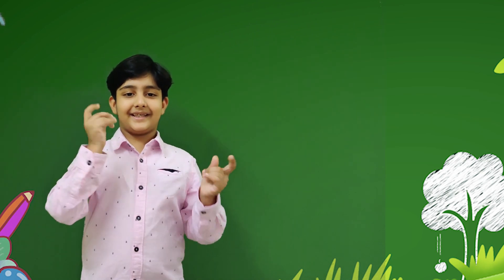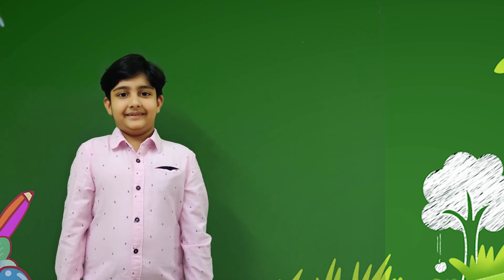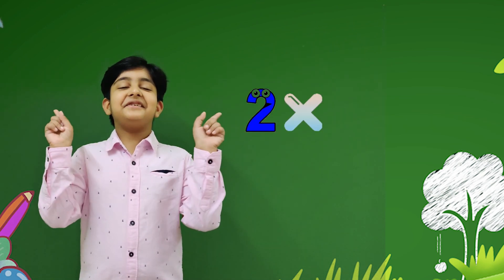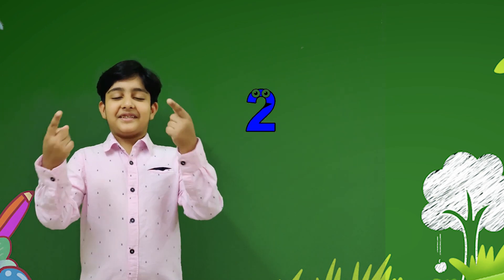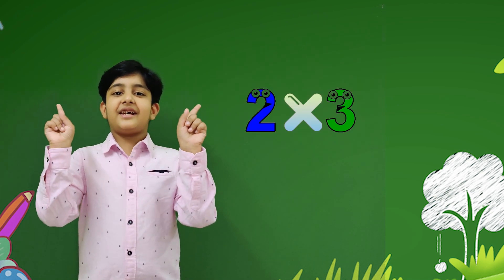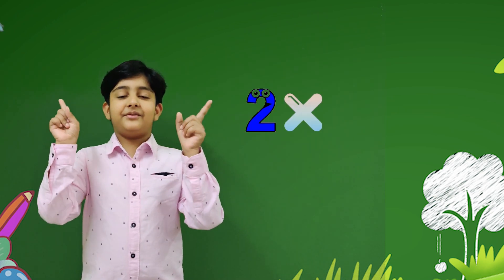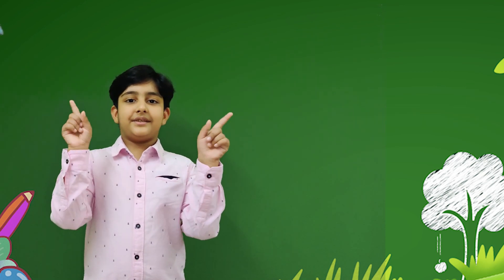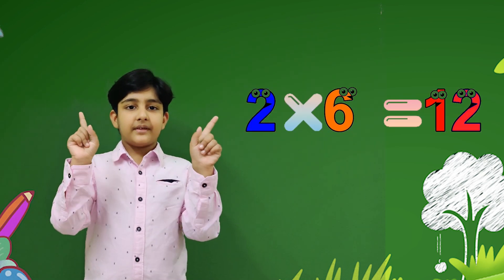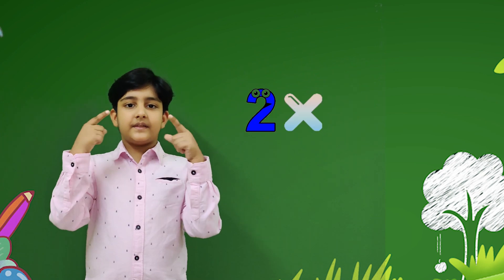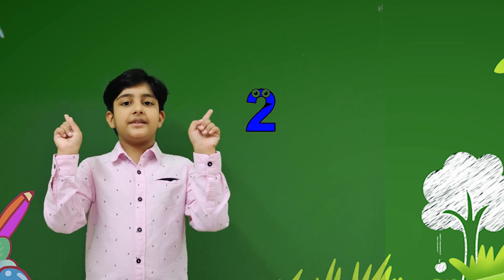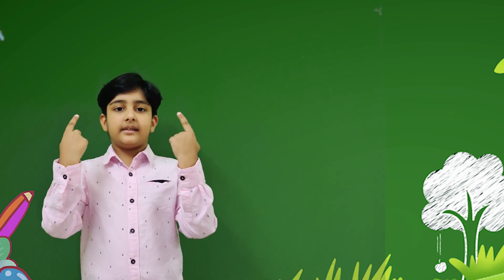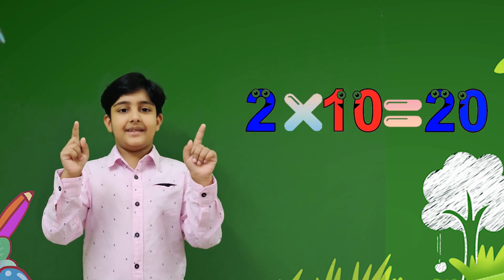Let's sing again! 2 ones are 2, 2 twos are 4, 2 threes are 6, 2 fours are 8, 2 fives are 10, 2 sixes are 12, 2 sevens are 14, 2 eights are 16, 2 nines are 18, 2 tens are 20.